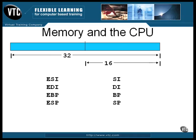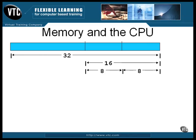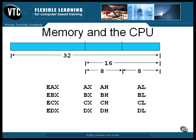There are four more registers shaped like this. Again, the letter E stands for the whole 32-bits. But the naming convention changes after that. The letter X stands for the 16-bit part. The letter H stands for the high order 8-bits, the byte on the left. And the letter L stands for the low order 8-bits, the byte on the right. For example, the A register goes by one of four names depending on which part of it you want to address: EAX is the whole thing — the full 32-bits; AX addresses only the 16-bit portion; AH is the name of the high order byte; and AL is the name of the low order byte. There are four of these registers, named A, B, C, and D.